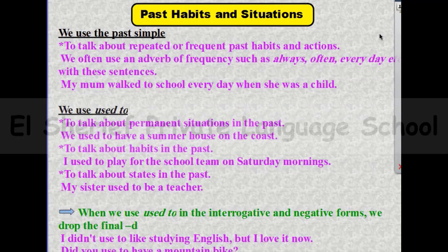Our grammar today is about past habits and situations. Number one: using the past simple. We use the past simple to talk about repeated or frequent past habits and actions, and we often use an adverb of frequency such as always, often, or every day with these sentences.